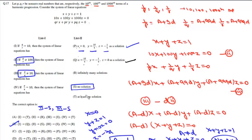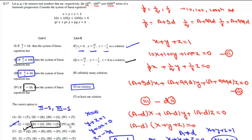The first condition matches with Q. Since the second and third already match with S, the fourth condition (A = d) matches with R. So the correct option is option B.